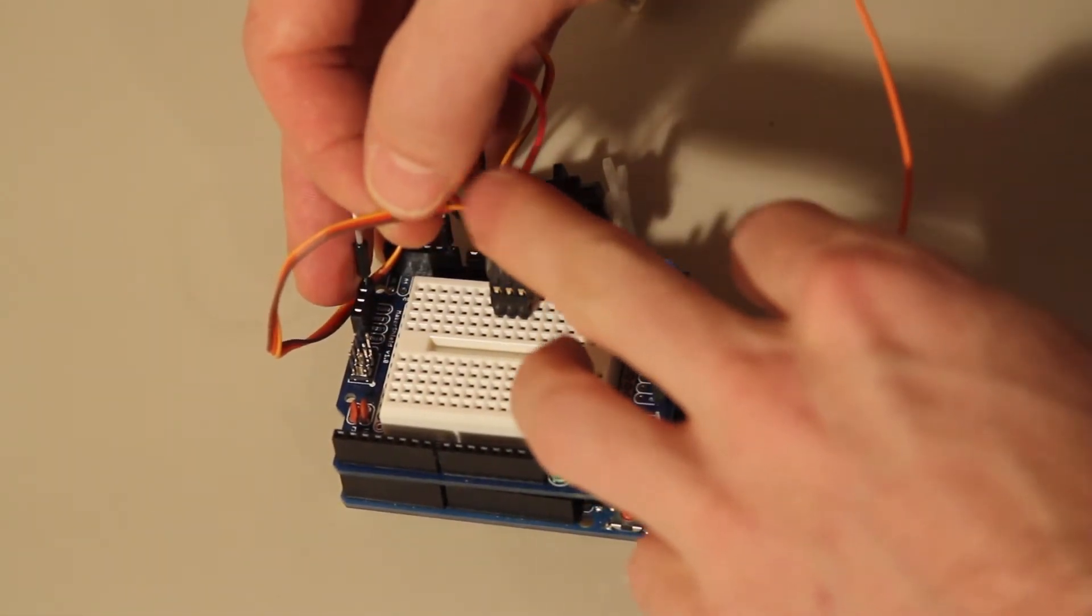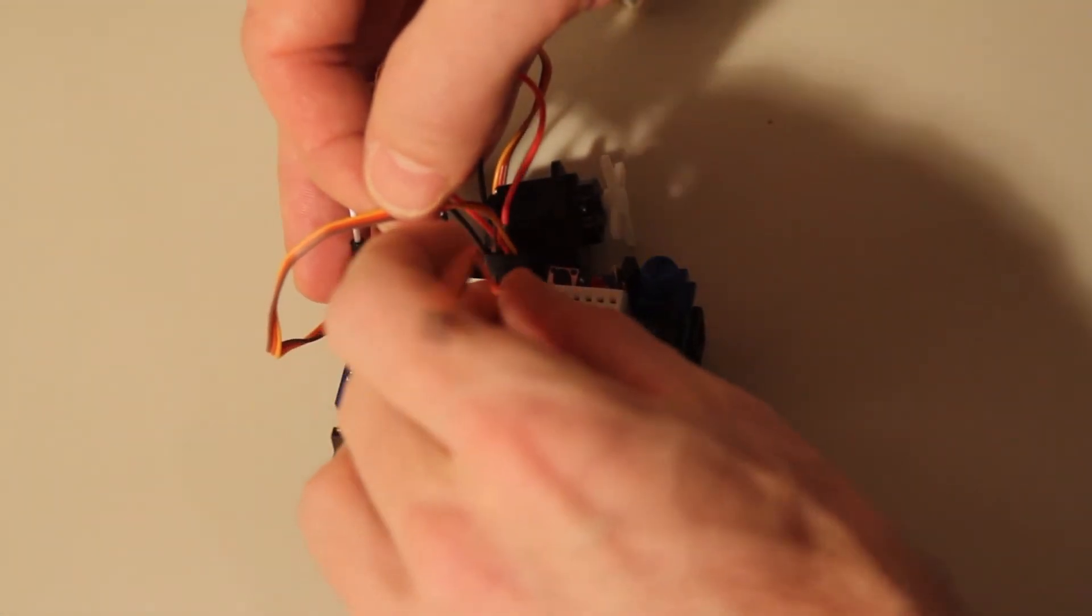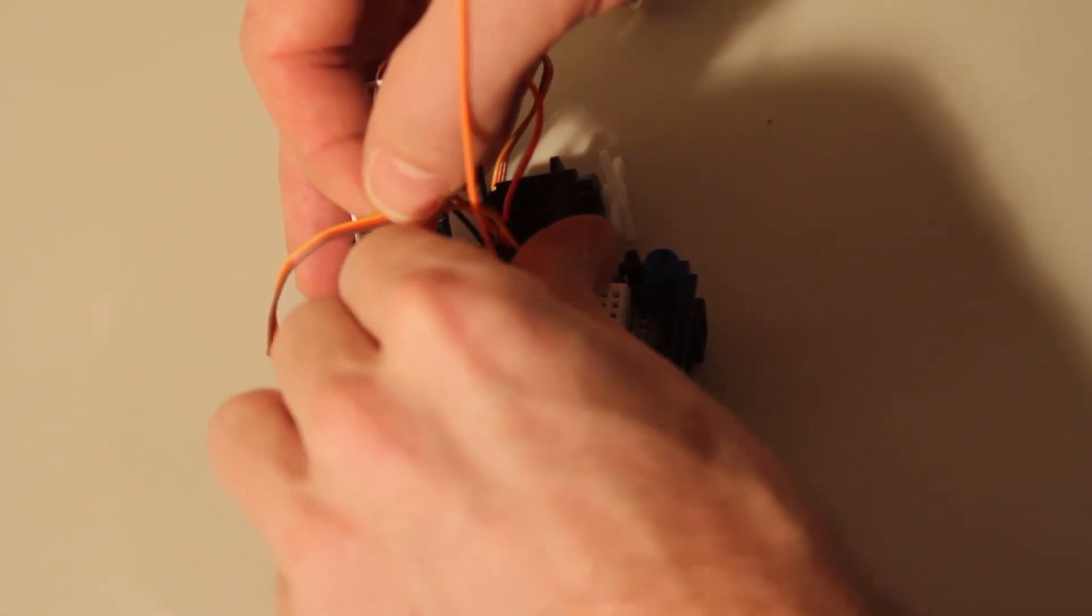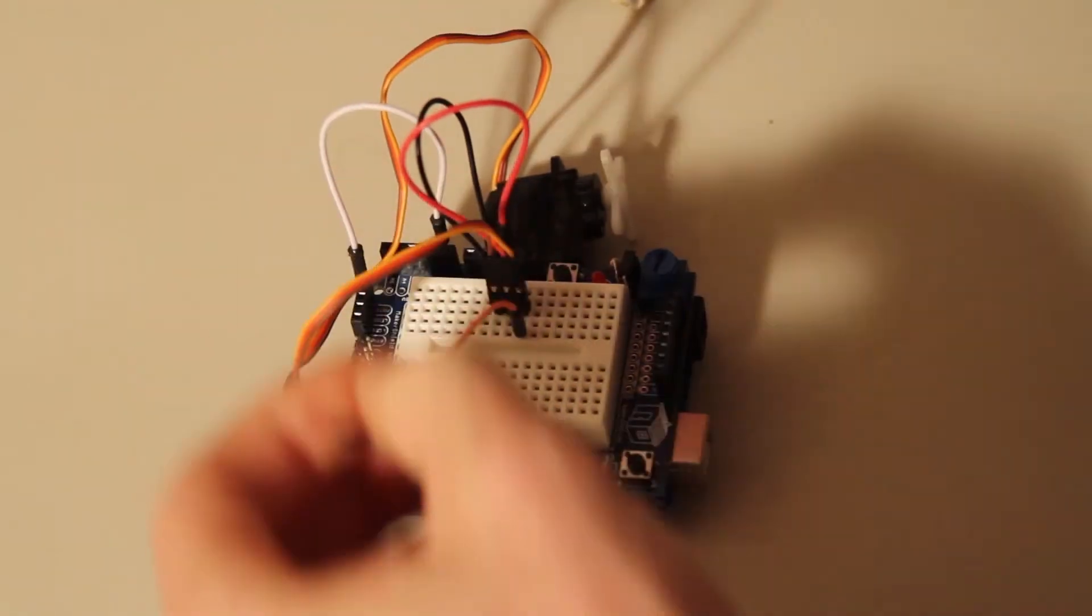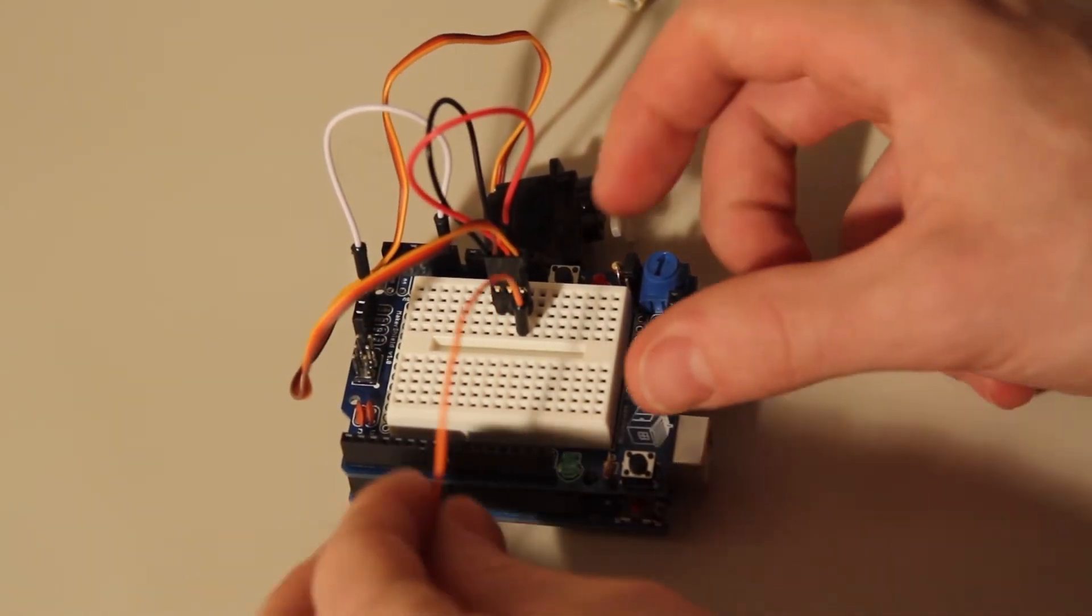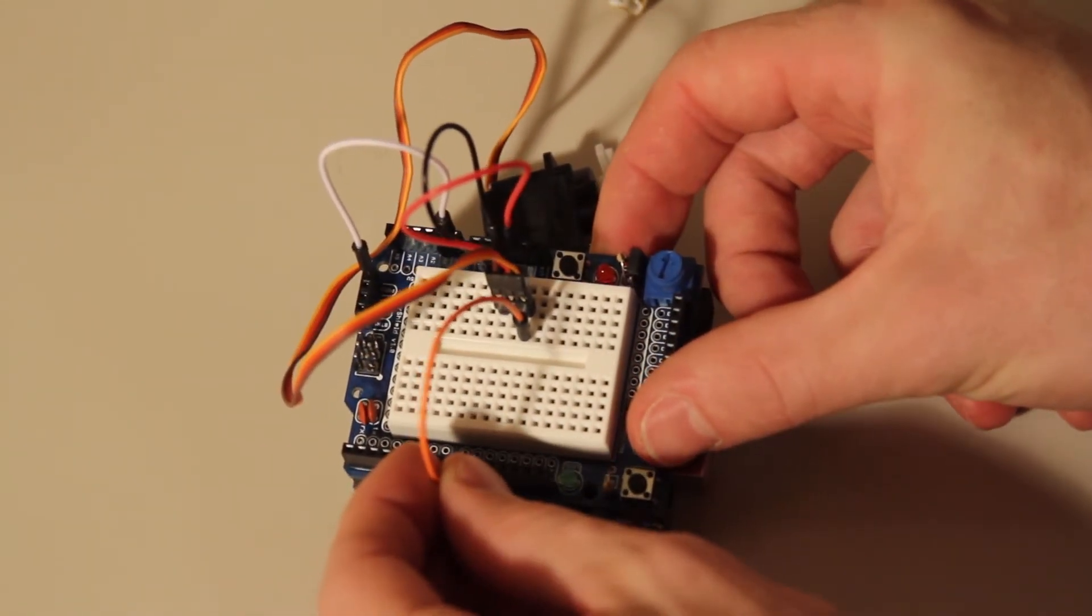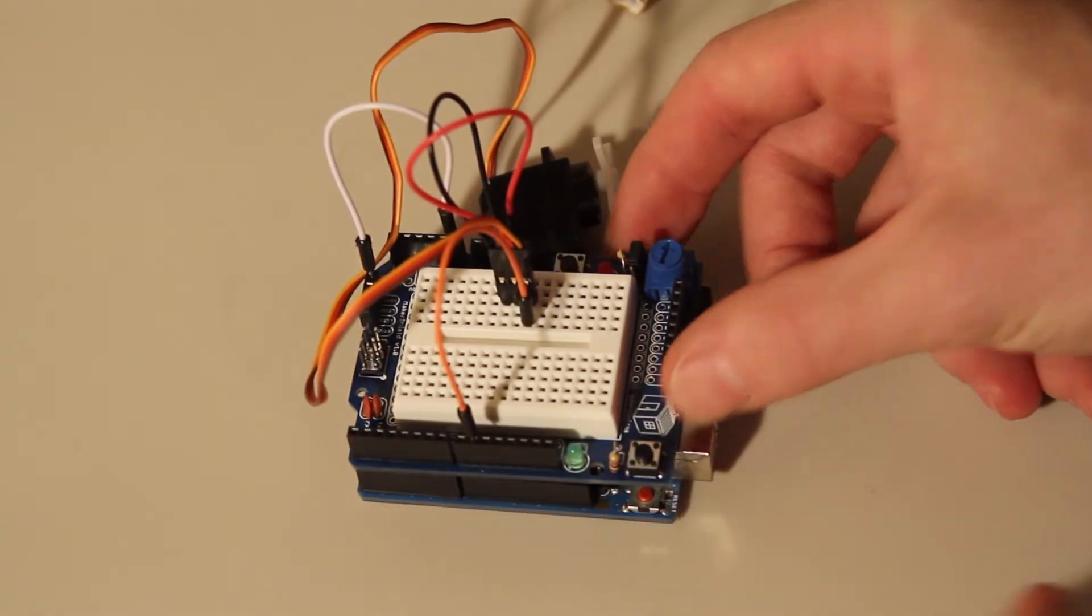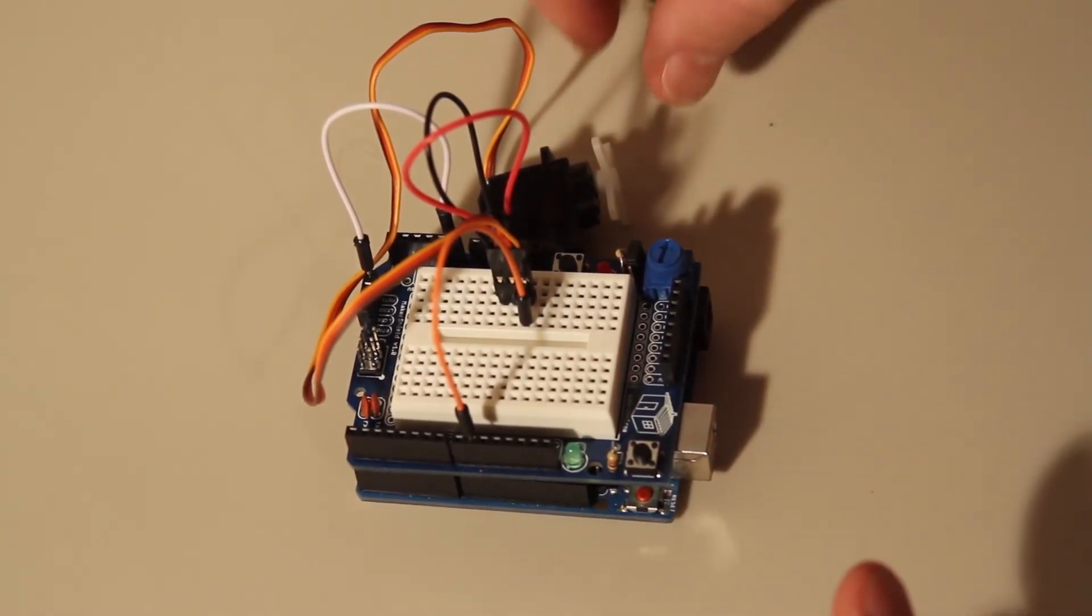The last one, orange, we're going to take to, let's see, digital pin 9. Because it's one of the pins with pulse width modulation, PWM. And let's hook it up.